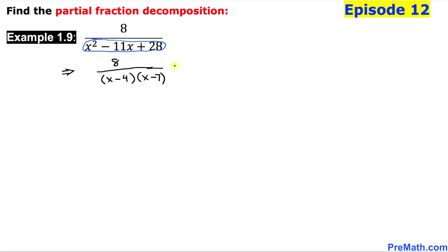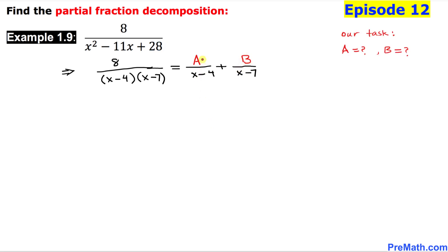Now we are going to do the partial fraction decomposition. I can simply write two fractions separated by a plus sign. I am going to put down x minus 4 as the first linear factor denominator, and then x minus 7 as the other linear factor denominator. On the top of the first fraction I am going to put constant A, and for the second fraction, constant B. Our task is to find the values of A and B.